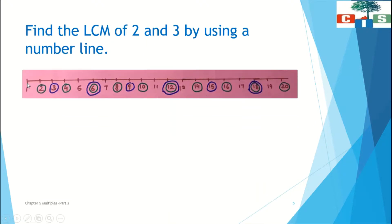First we have to find all the multiples of 2 on the number line, then locate all the multiples of 3, and from there we can find the LCM. This number line goes from 1 to 20. I have used green color to circle the multiples of 2: 2, 4, 6, 8, 10, 12, 14, 16, 18, and 20.